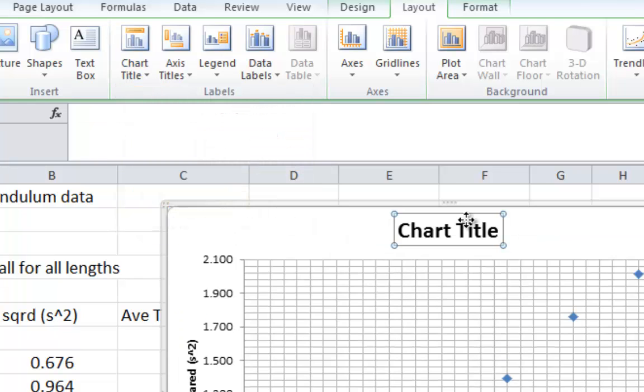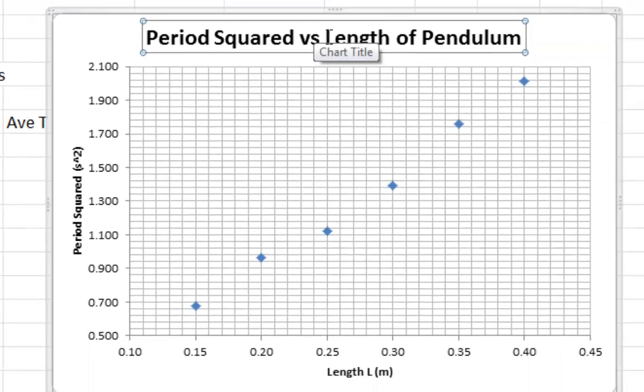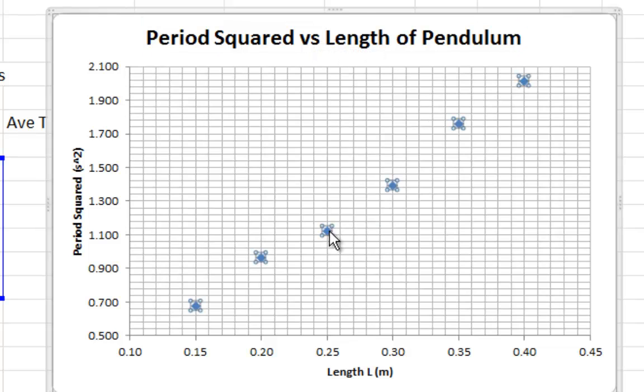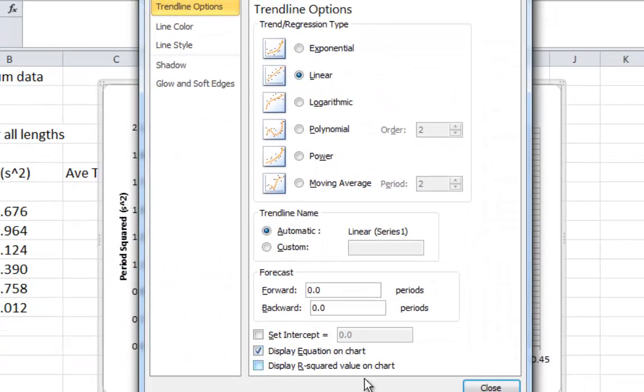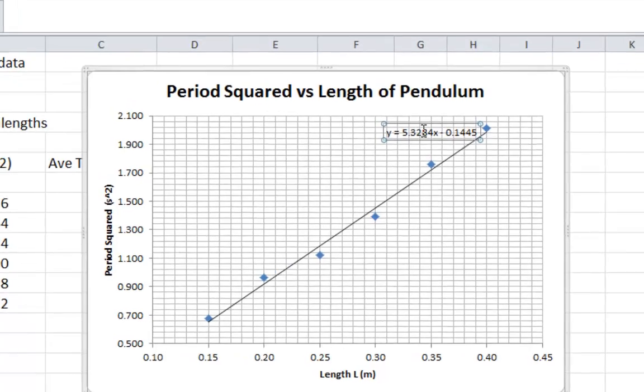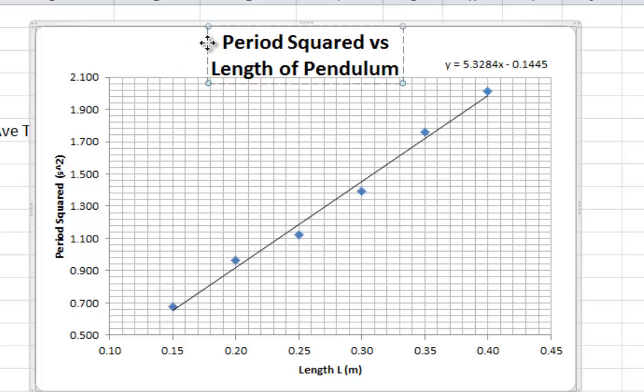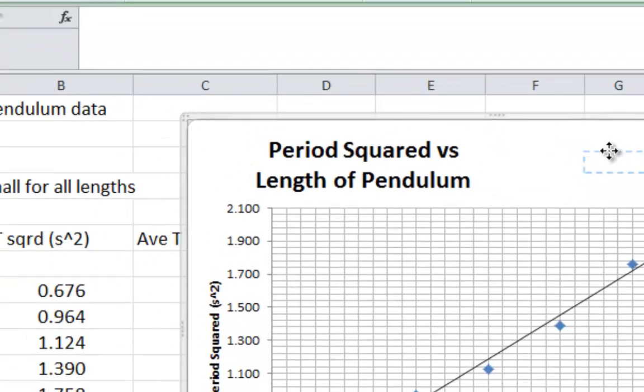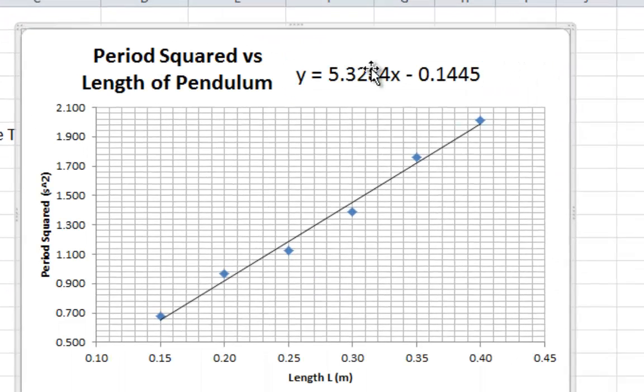Then you put the title above the chart. This time we have period squared versus length of pendulum. Okay. Now. Insert your line of best fit. That's your trend line. And you want linear. You turn on your equation line. There it is there. Drag your equation up to the top. You can make your title like that. And then drag your title sideways. Go to your home button. There it is there. Increase the font size. So that you can read the thing.